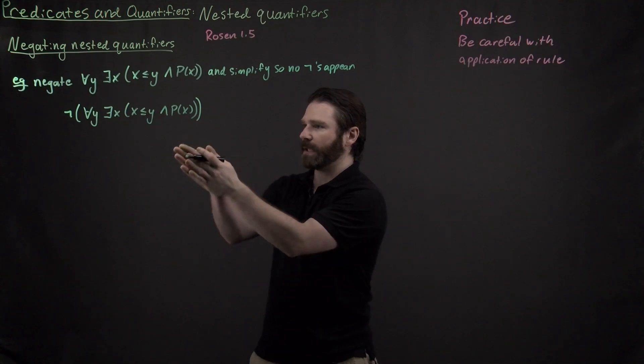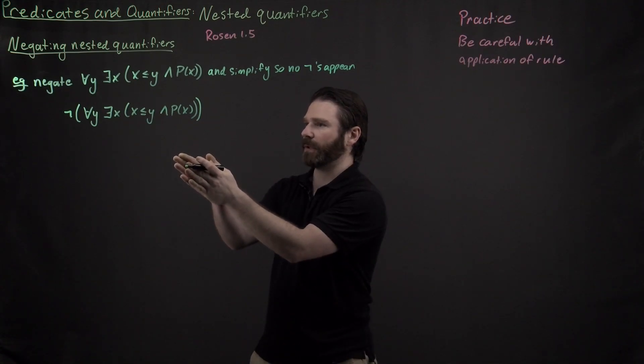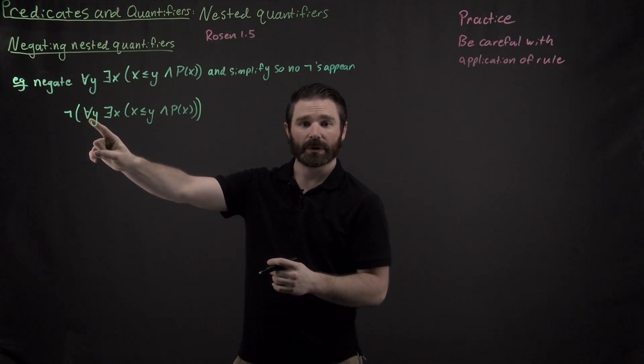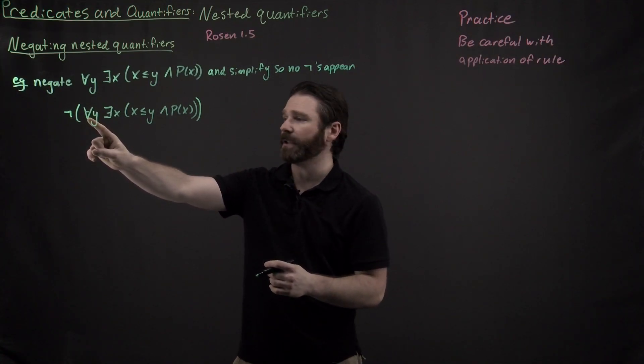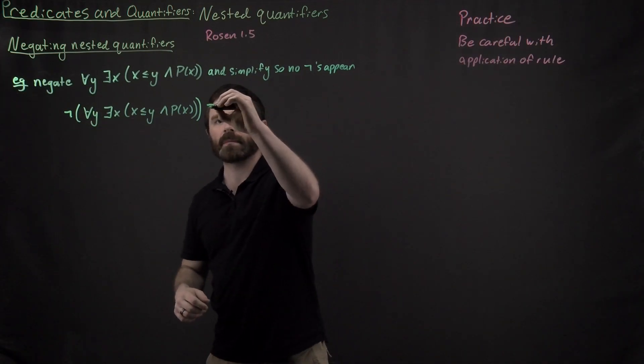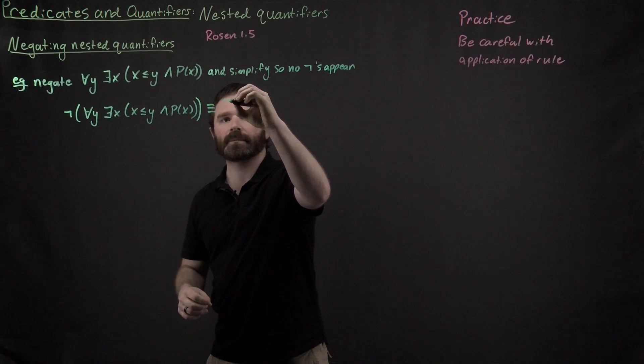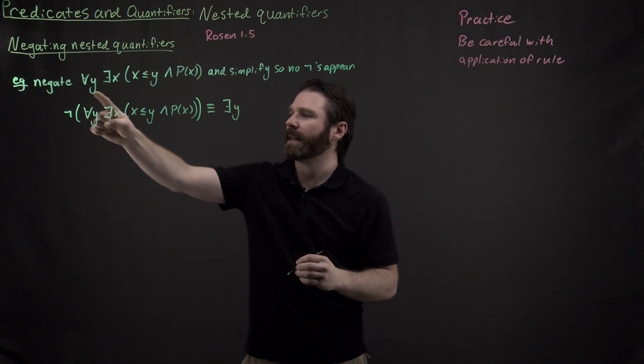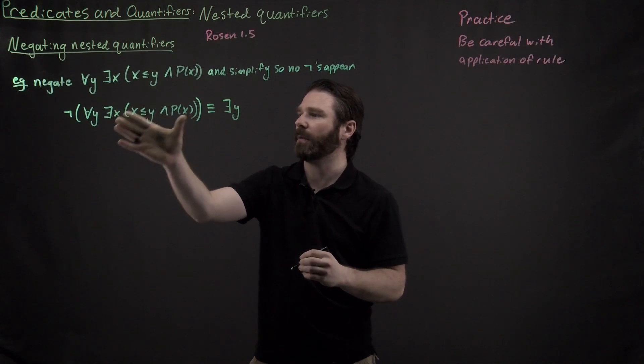Okay, so I need to apply DeMorgan's law first off. So DeMorgan's law tells me whenever I try to negate a universal quantifier right here, what I'm going to have to do is flip the universal to an existential, and then I have to apply that negation to the rest of my expression.